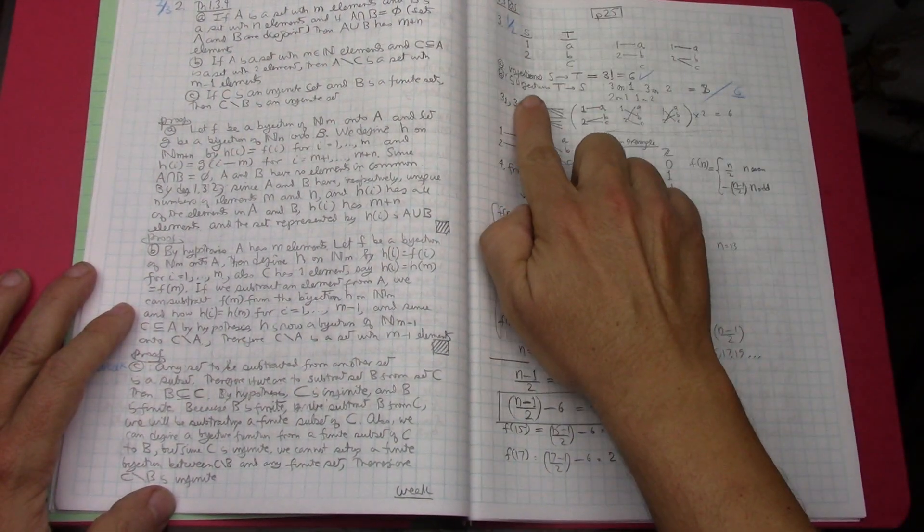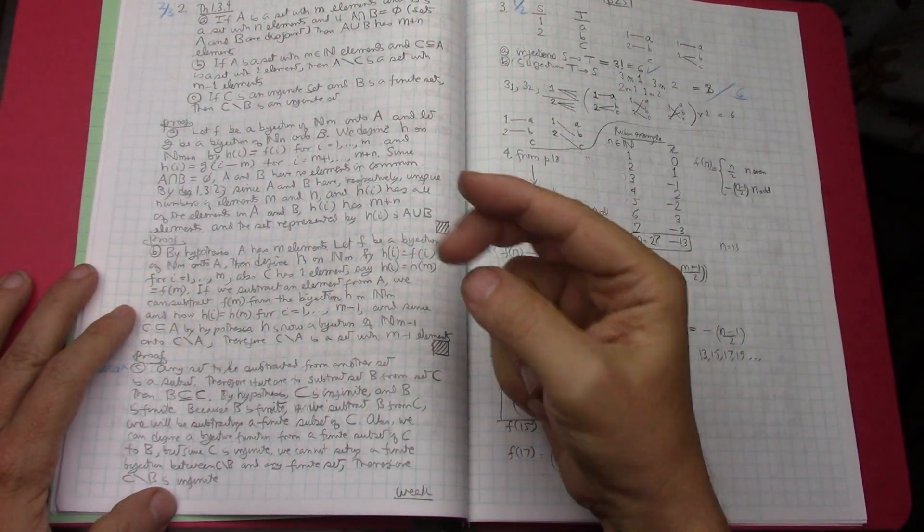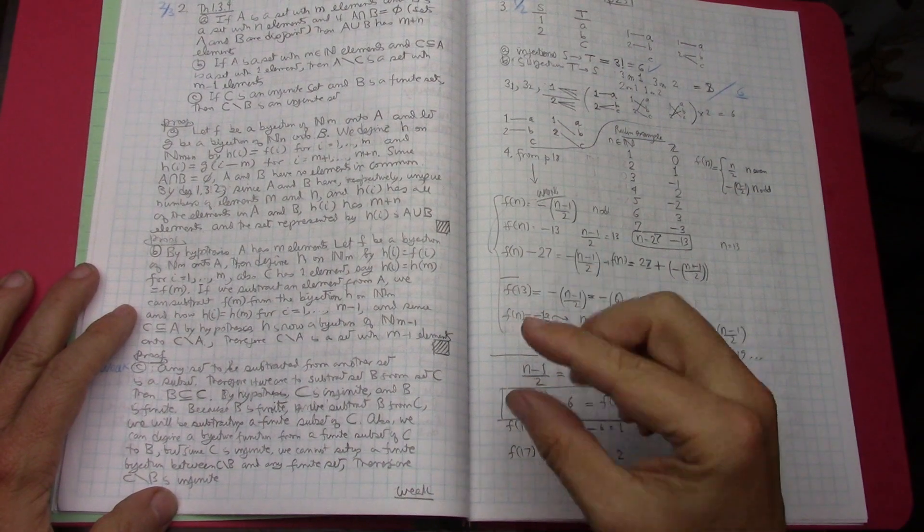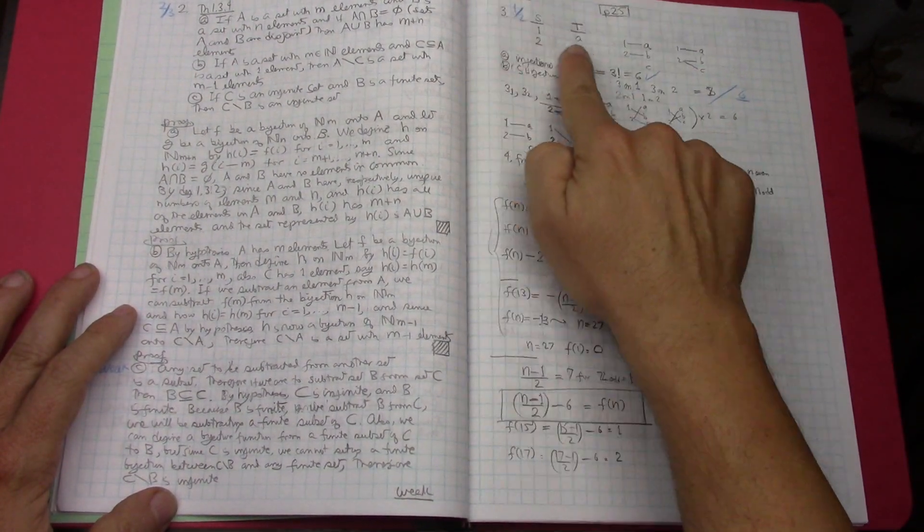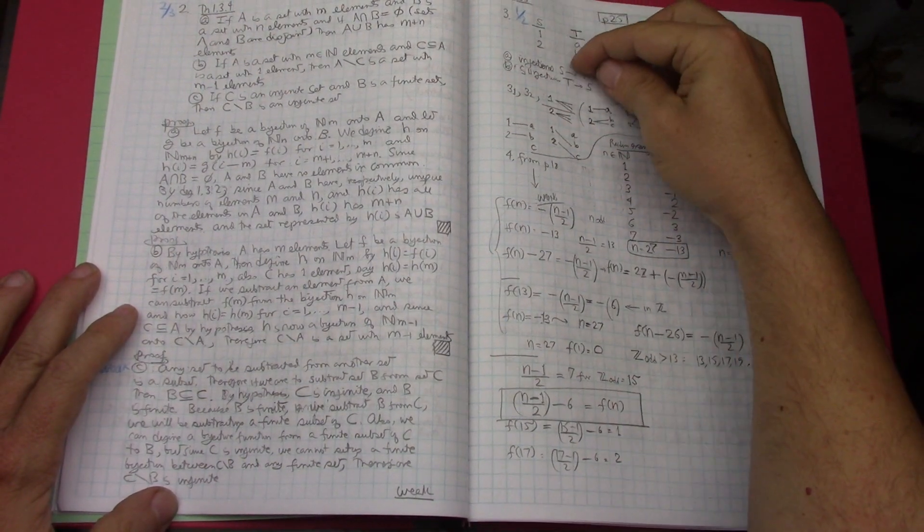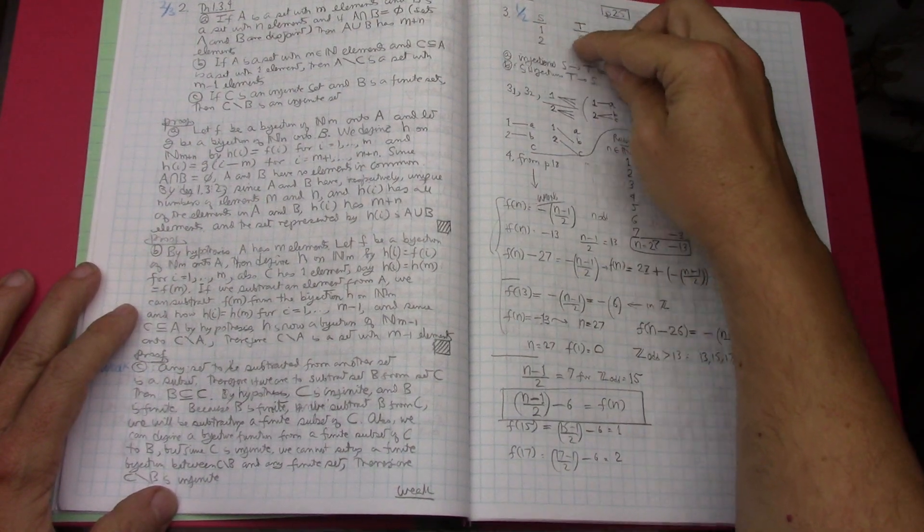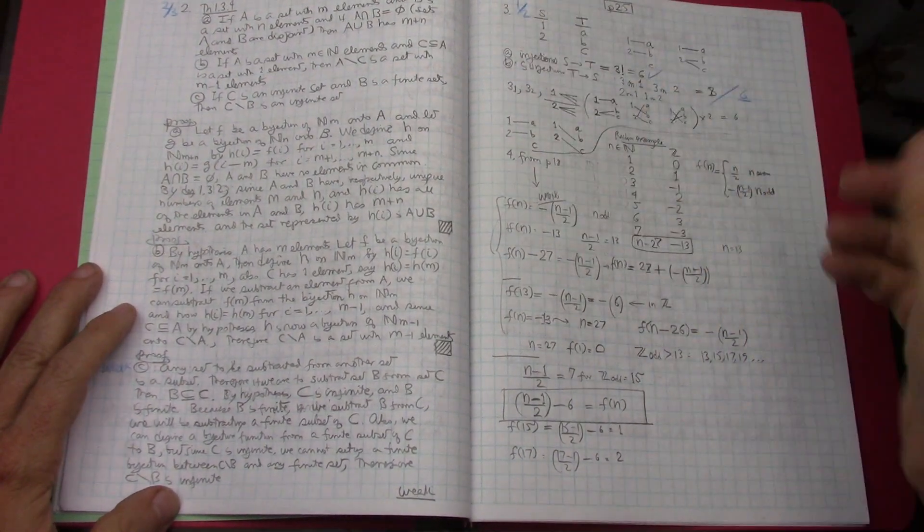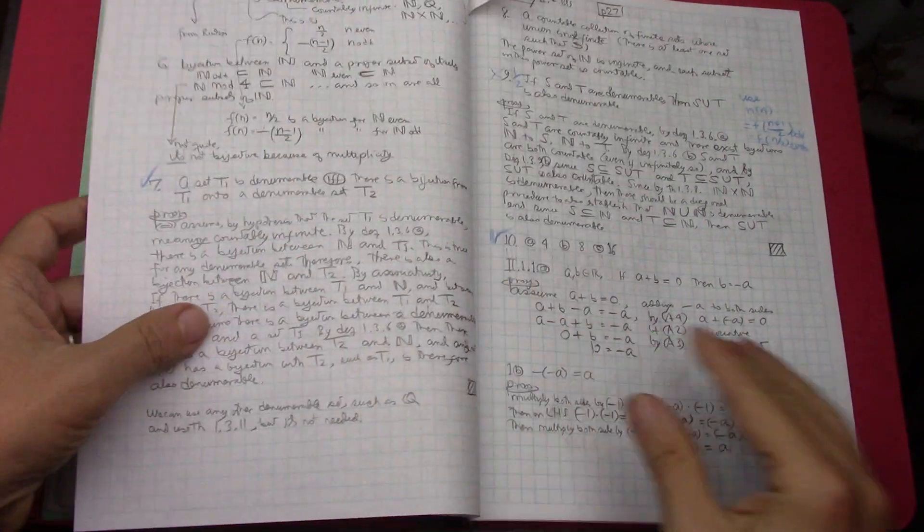And for some reason, I screwed up the surjective. I thought you could map, you have two to three. I thought you could map every single one of them to just one point and I was wrong. So, learn something.